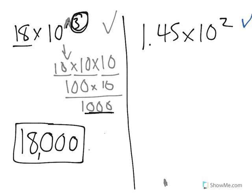So over here we have 1.45 times 10 squared. Now remember, 10 squared would be equal to 10 times 10, or 100. So the question is saying, what is 1.45 times 100?